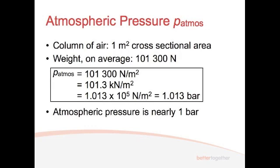And so the pressure of the atmosphere, at ground and sea level, is 101,300 newtons per metre squared. Obviously, kilonewtons per metre squared, you just divide that by 1,000, you get 101.3 kilonewtons per metre squared.